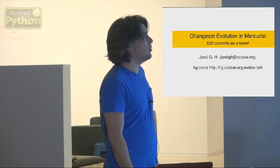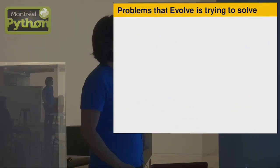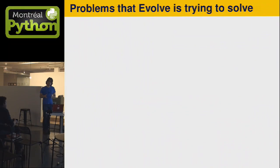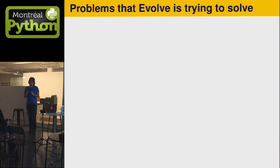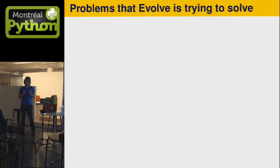In order to tell you what Mercurial is doing with evolution, with changeset evolution, I want to speak about the problems it's trying to solve. There are a few problems with the way people collaborate right now. They're not very big, but they're problems we'd like to fix.